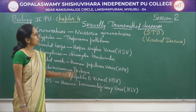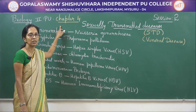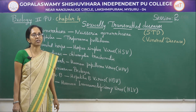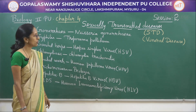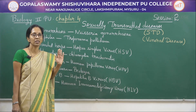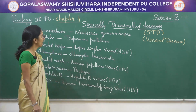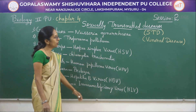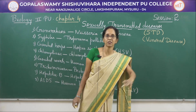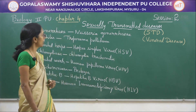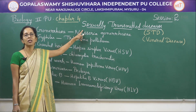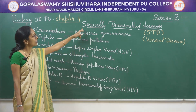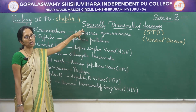Hello everyone, welcome to session number 2 of chapter 4, which is reproductive health. In the last session we understood contraceptive methods — prevention of conception, that is contraception — and there are two types: temporary and permanent. Now in this session we will understand sexually transmitted disease, also known as venereal disease or STD. As the name itself indicates, STD is a disease transmitted during sexual intercourse.